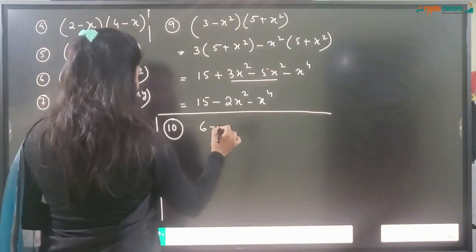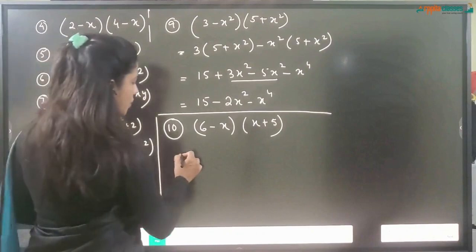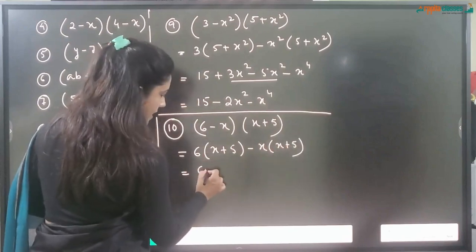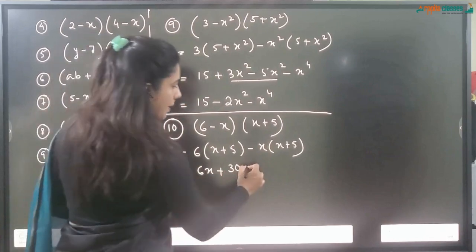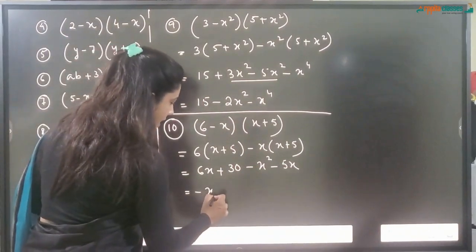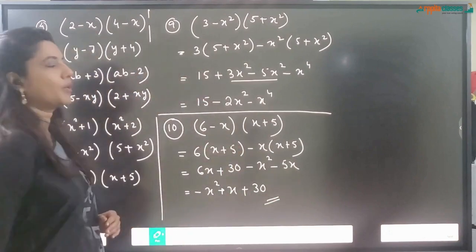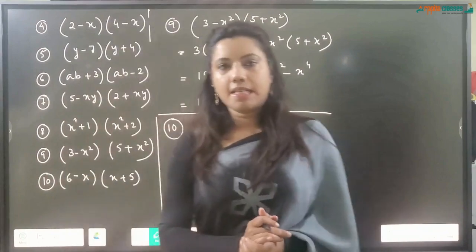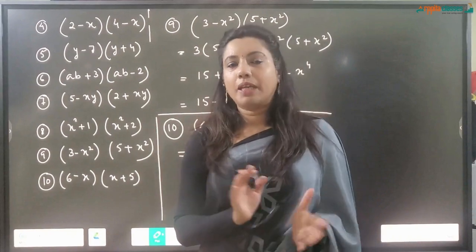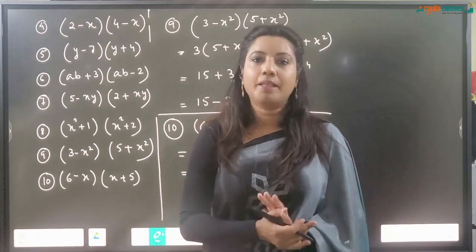Question number 10: (6 - x)(x + 5). We can't use the formula here either, so multiply normally: 6(x + 5) - x(x + 5) = 6x + 30 - x² - 5x = -x² + x + 30. We have four more questions in this exercise which will be posted separately. Just be careful about the signs while multiplying — use the formula where applicable, otherwise multiply normally.